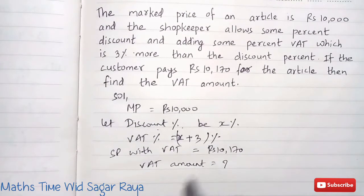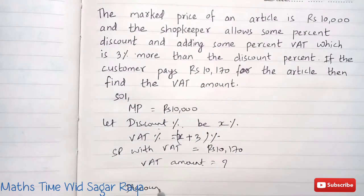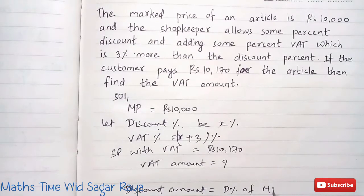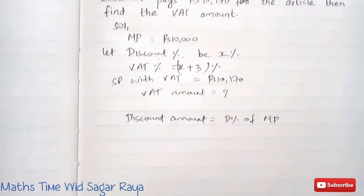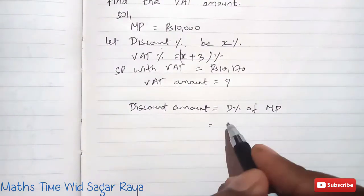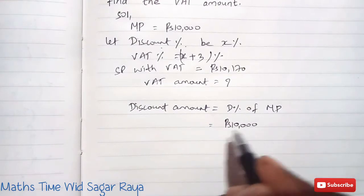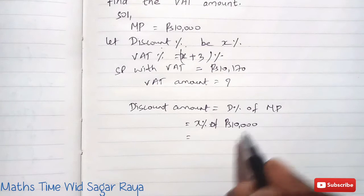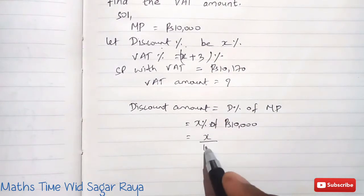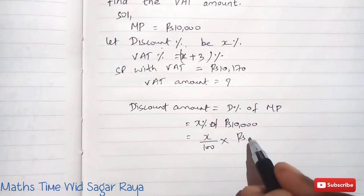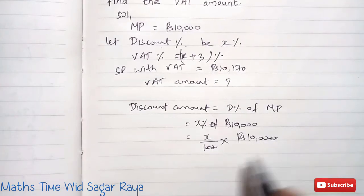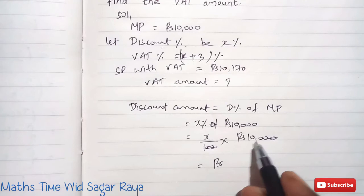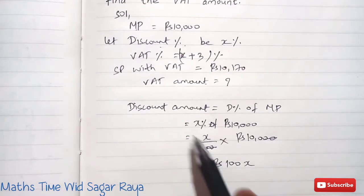MP is given and discount percent we supposed as X percent, so we can write: discount amount equals discount percent of MP. Discount percent is X percent of 10,000. X divided by 100 into 10,000 — cancelling gives us discount amount equals 100X rupees.